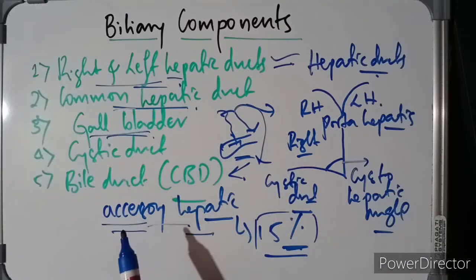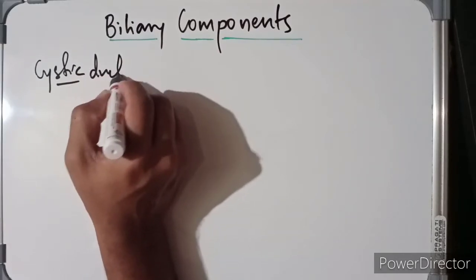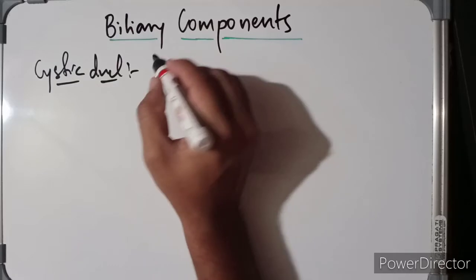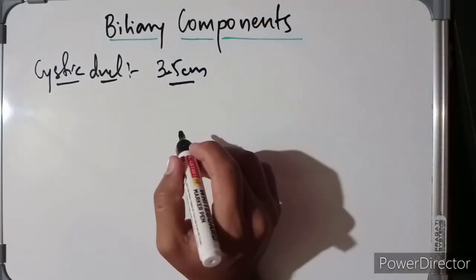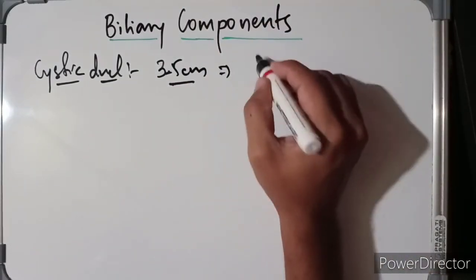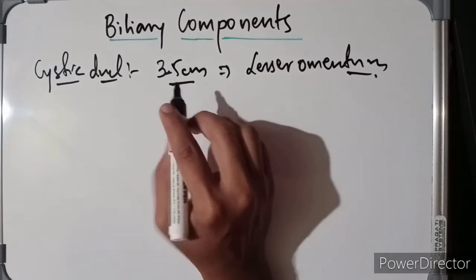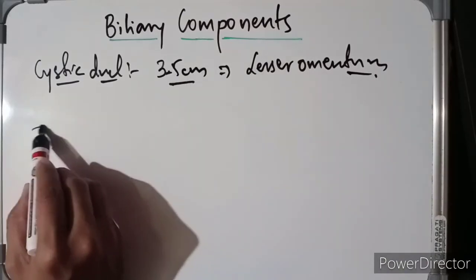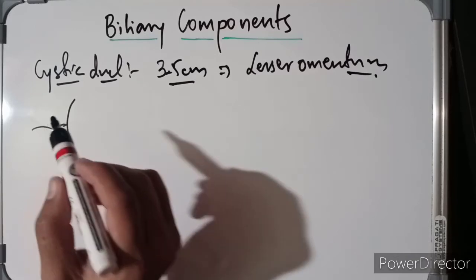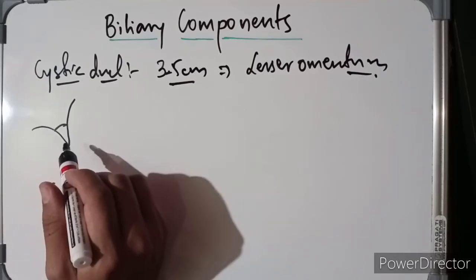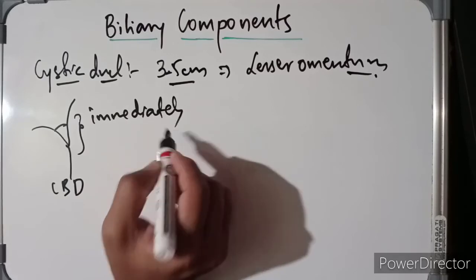Now let's discuss about the cystic duct. The cystic duct is around 3 to 5 centimeters in length and runs backward and downward from the neck of the gallbladder. It runs in the lesser omentum with the common hepatic duct and joins it at an acute angle to form the common bile duct. This angle is known as the cystohepatic angle, and its junction with the common hepatic duct is usually situated immediately below the porta hepatis.